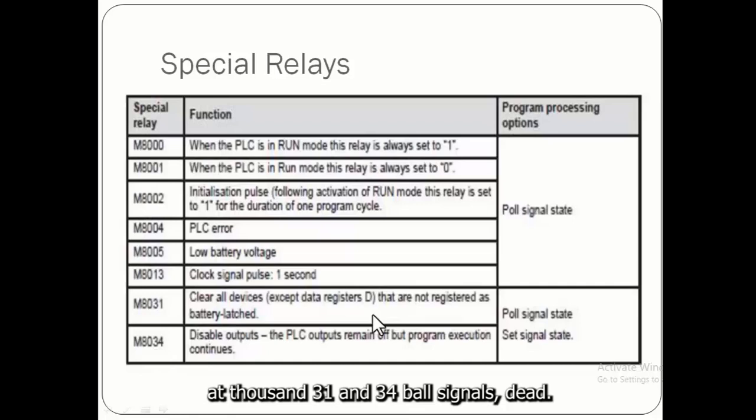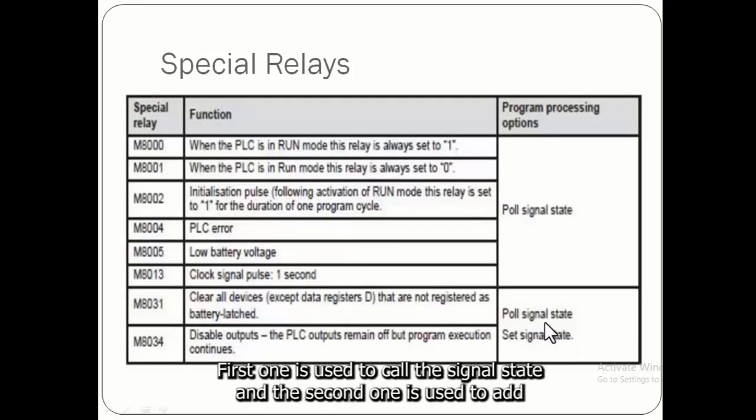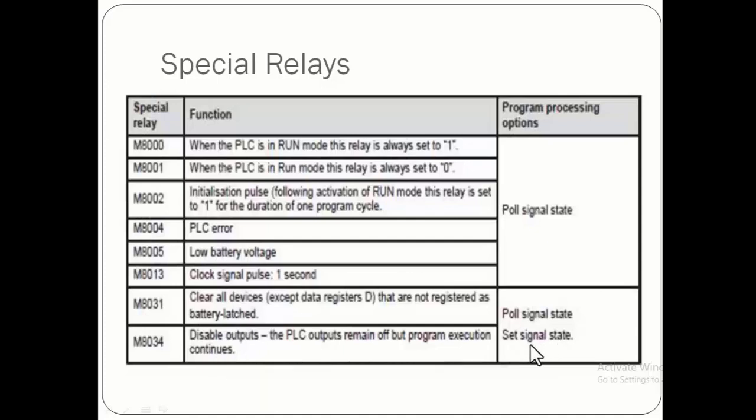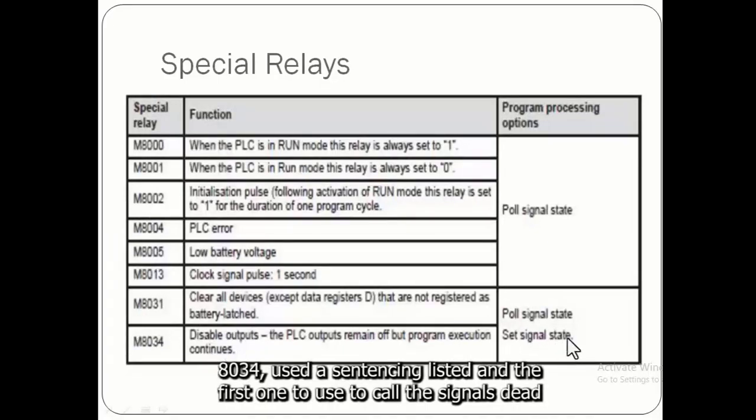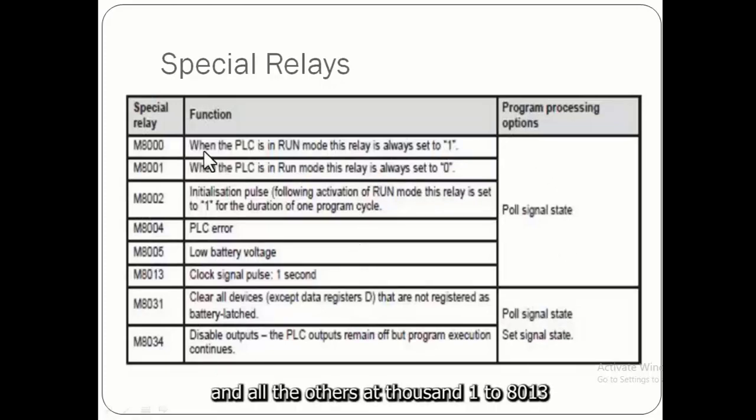M8031 and M8034 poll signal state and set signal state. The first one is used to poll the signal state and the second one M8034 is used to set the signal state. All the others M8001 to M8013 are used to poll the signal state.